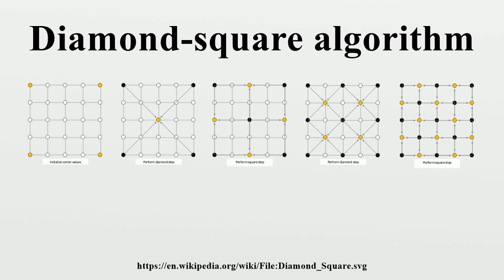The image below shows the steps involved in running the diamond-square algorithm on a 5x5 array.